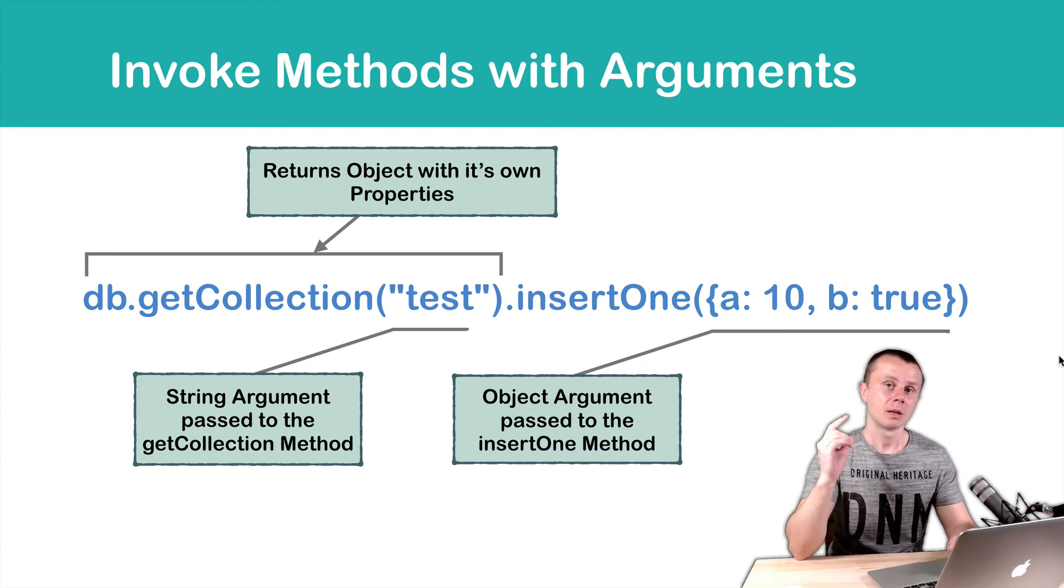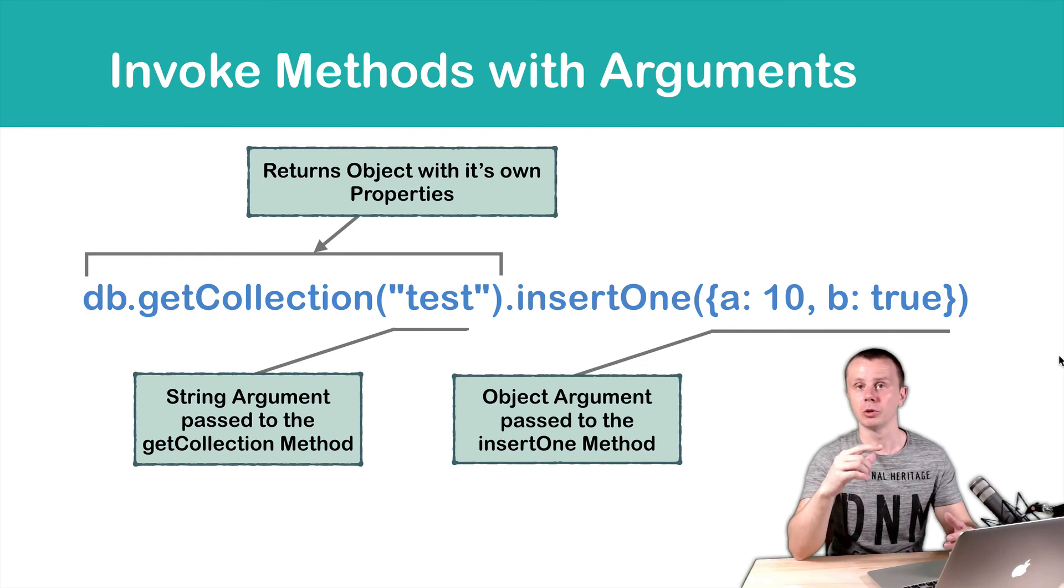So this lesson concludes the module about MongoDB shell. In the next module, we will talk a little bit more deeply about MongoDB types, specifically about object ID and about date. See you in the next module.